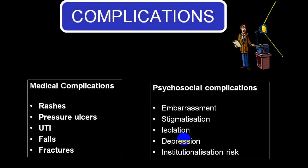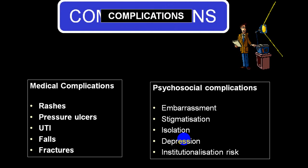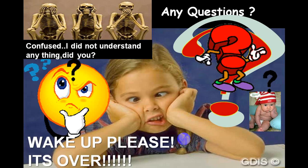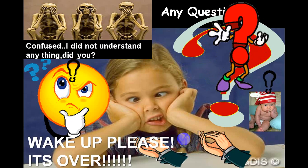Persons who develop incontinence may have common medical complications including rash due to continuous incontinence, pressure ulcers, recurrent UTI, and falls leading to fractures. Psychosocial complications include embarrassment, stigma, social isolation, psychological disturbances like depression, and sometimes institutional care requirements. Psychological factors and recurrent UTI are the most common complications. This concludes the lecture on urinary incontinence.